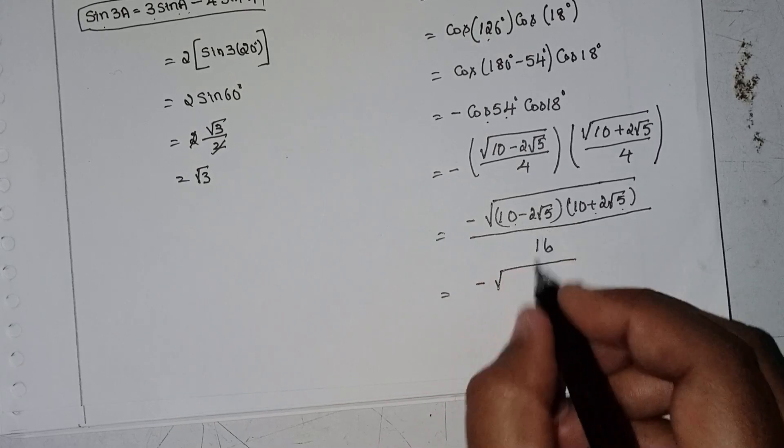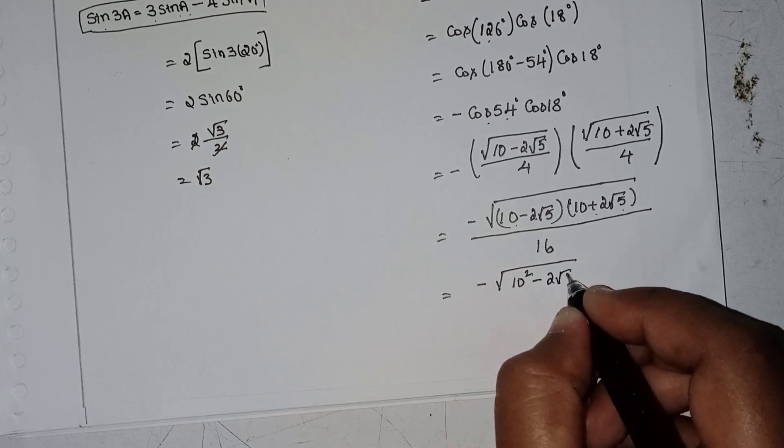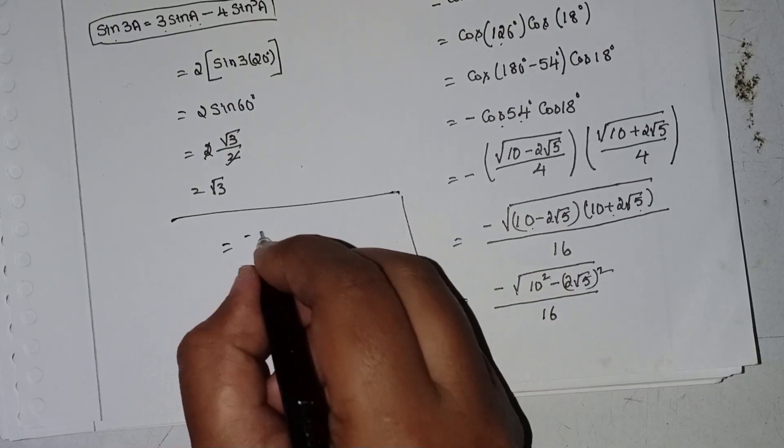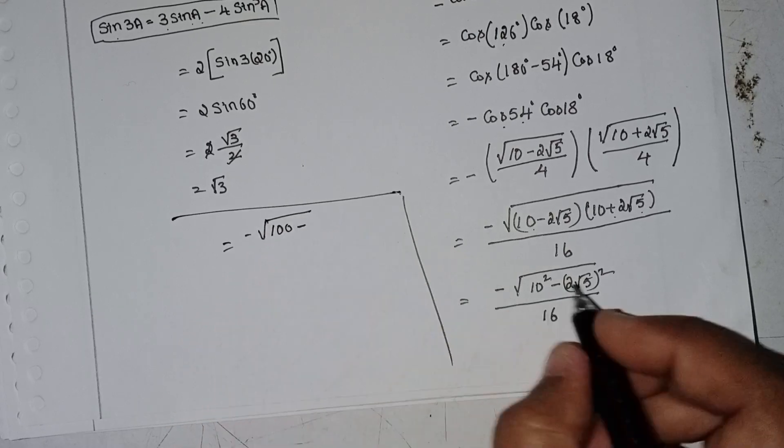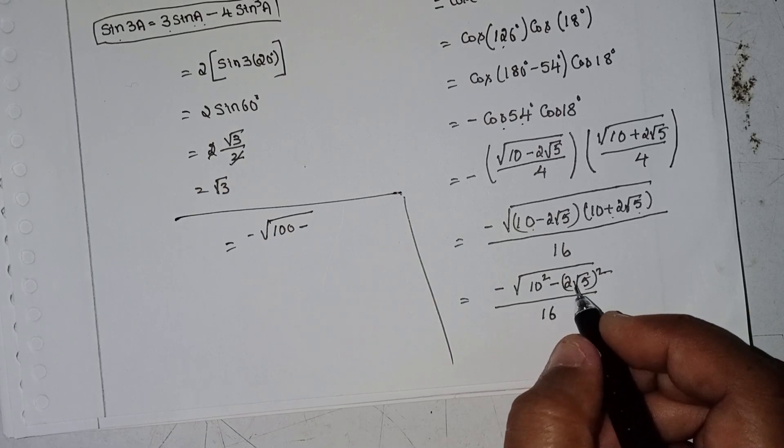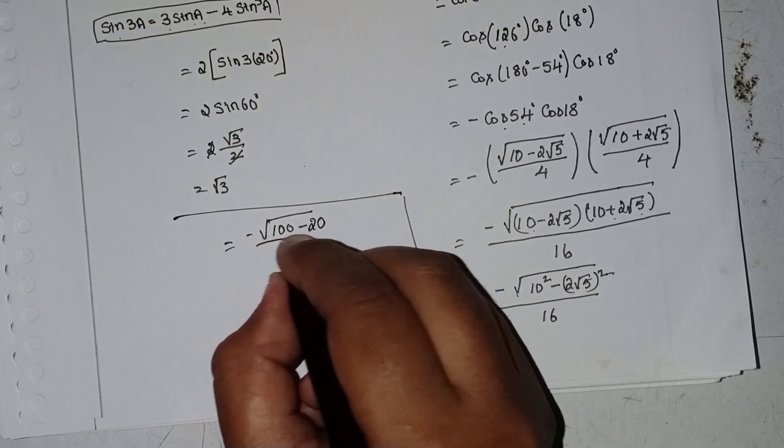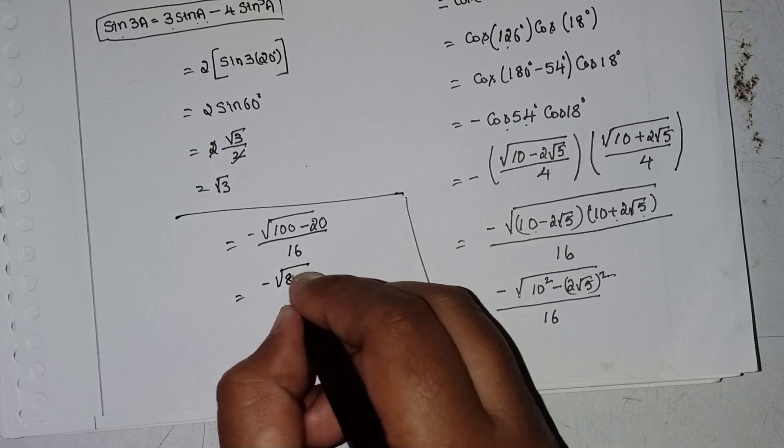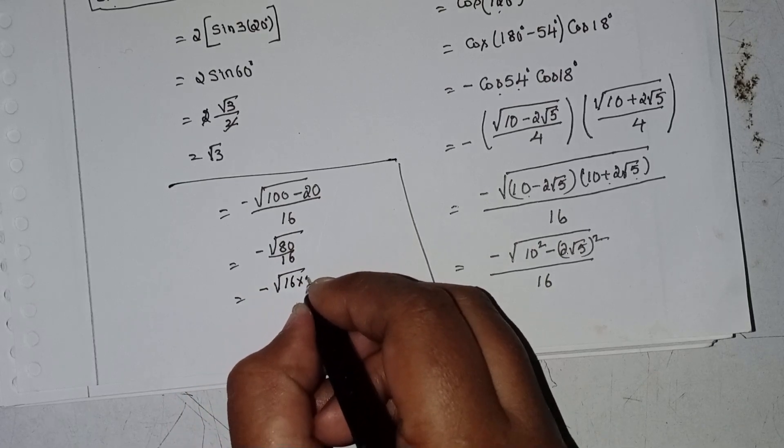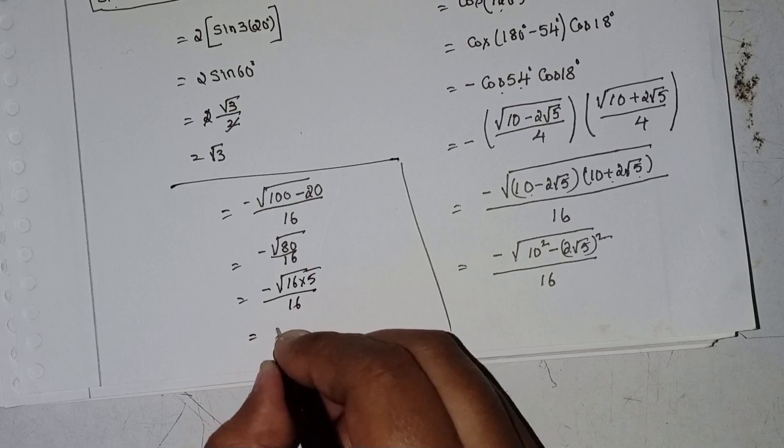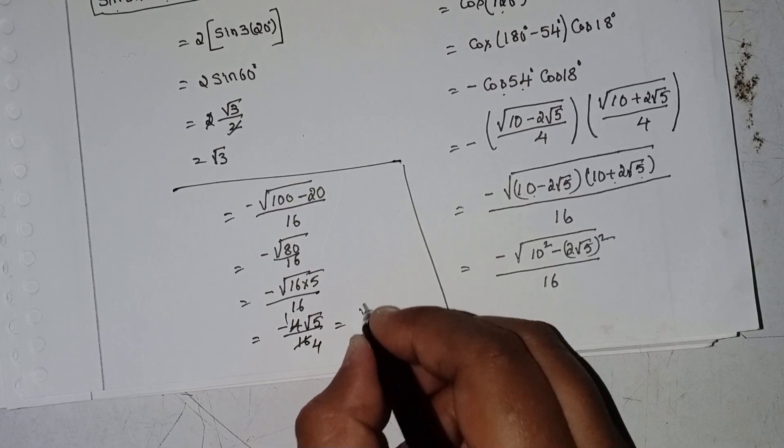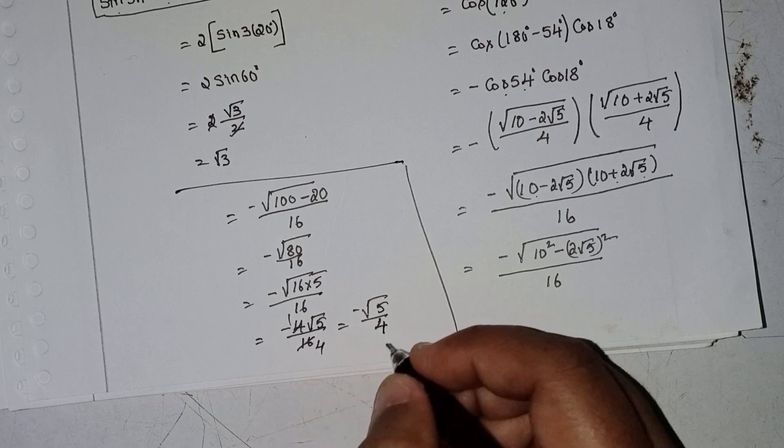This becomes negative root over (10 - 2 root 5) by 4 times root over (10 + 2 root 5) by 4. Using (a+b)(a-b) = a² - b², we get (10 - 20) by 16 = -10 by 16. This simplifies to root over 80 by 16. Since 80 = 16 × 5, this is 4 root 5 by 16, which equals root 5 by 4. So the answer is negative root 5 by 4.